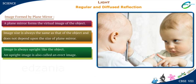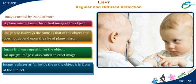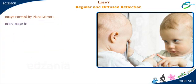Image is always upright like the object — an upright image is also called an erect image. Image is always as far inside the mirror as the object is in front of the mirror.